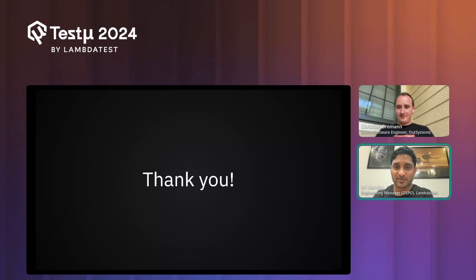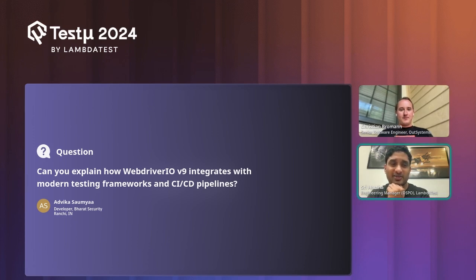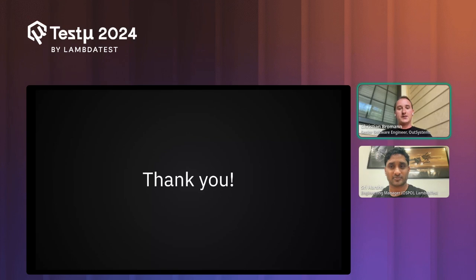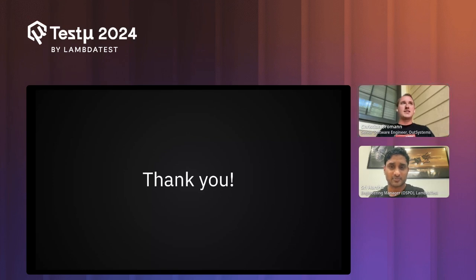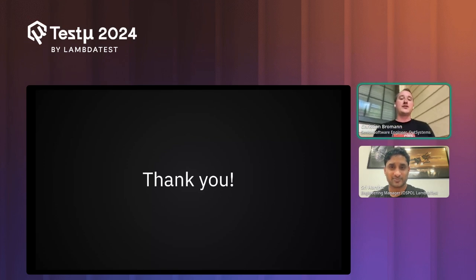Q: How does WebdriverIO 9 integrate with modern testing frameworks and CI/CD pipelines? A: WebdriverIO has a CLI command you can use to trigger it in your CI/CD pipeline. For test frameworks, WebdriverIO integrates with Mocha, Jasmine, and Cucumber. We're not planning to add Jest or Vitest right now since those are more unit-test focused. We'll stick with Mocha, Jasmine, and Cucumber, and you're welcome to contribute a new one if you'd like.